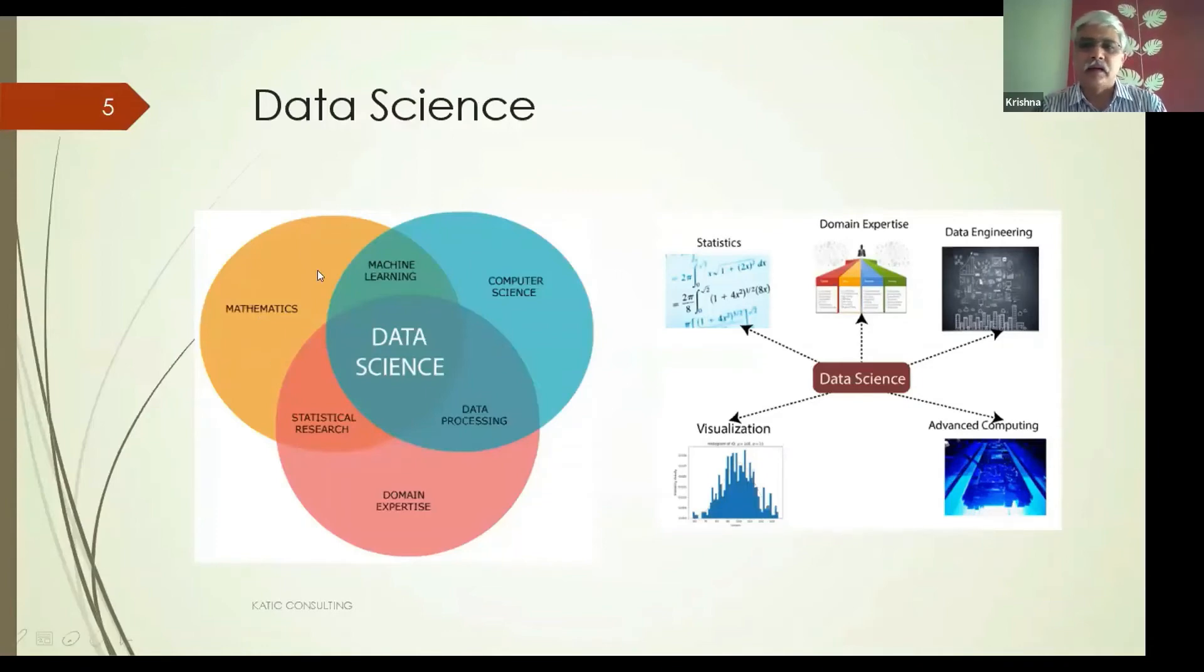The last part is the mathematics, the statistics part. For us to write a prediction or to work out a prediction of these probabilities, we need to actually use statistical tools, which will be a statistical tool that we are writing using a machine learning algorithm or an existing one that's available. If you see, with this example we can actually see that all these three areas kind of come together for us to solve a typical data science problem.